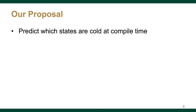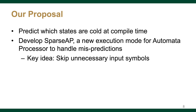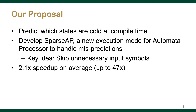In this paper, first, we predict which states are hot at compile time and only configure the predicted hot states to the AP. Second, we developed Sparse AP, a new mode of AP that only executes the necessary portion of input for handling mispredictions. Our results show we achieved 2.1 times speedup on average.